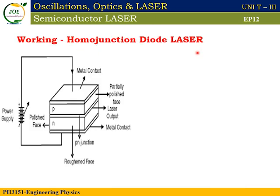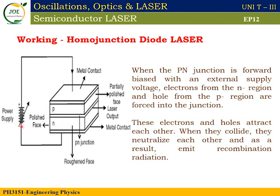The homo junction diode laser works as follows. The PN junction diode is under forward bias — the P-type semiconductor is connected to the positive terminal and the N-type semiconductor to the negative terminal. In forward bias, the battery drives holes in the P-type and electrons in the N-type as charge carriers toward the junction. The holes and electrons attract and meet at the junction — this process is called recombination. One positive hole and one negative electron pair in recombination. The recombination process emits energy as light, and this light is the laser light.